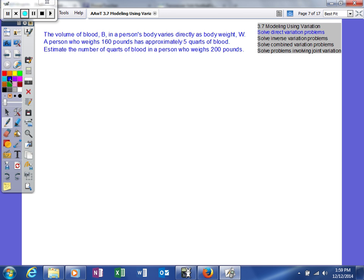The first thing we have to do is write our equation. It says volume of blood B varies directly as their weight. So we'll say B equals kW. W is in the numerator because there's direct variation, and we have a k because all variation problems have a k.